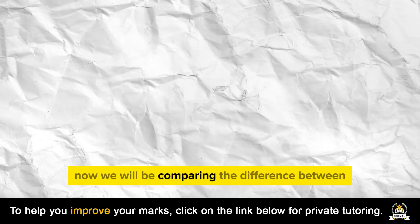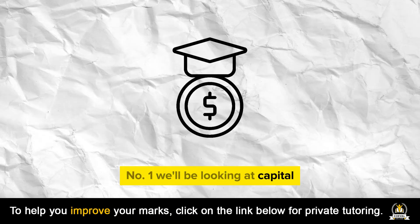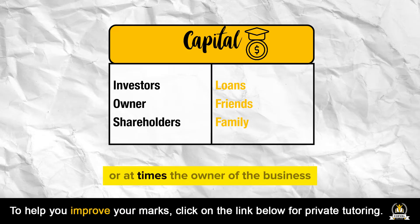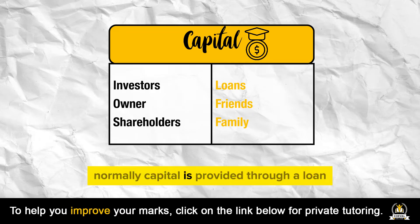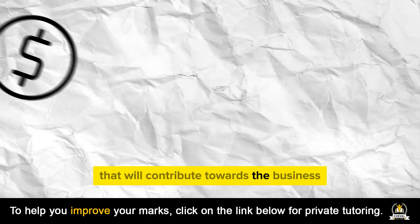We will be comparing the difference between the formal and informal bookkeeping systems across different elements of accounting. Number one, we'll be looking at capital. For formal bookkeeping, capital is normally contributed by either investors or the owner of the business. For informal, capital is normally provided through a loan or through personal savings that contribute towards the business.